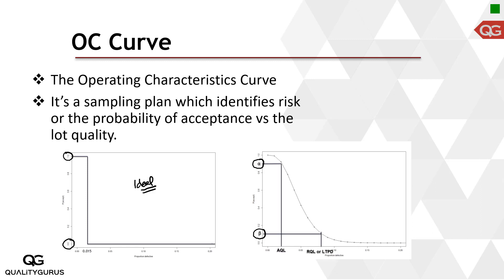We have two points: AQL at 1.5% and RQL at 8% — the maximum defect level we can accept. We also have two risk values: alpha at 0.05, meaning the producer takes a 5% risk of a good lot being rejected, and beta at 10%, which is the buyer's or consumer's risk of accepting a bad lot.